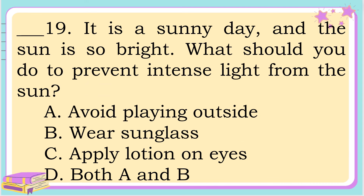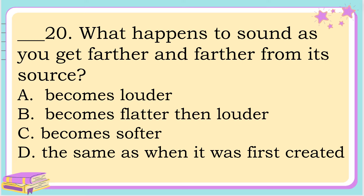Number 19. It is a sunny day and the sun is so bright. What should you do to prevent intense light from the sun? A. Avoid playing outside. B. Wear sunglasses. C. Apply lotion and ice. Or D. Both A and B. The answer is letter D: both A and B. Number 20. What happens to sound as you get farther and farther from its source? A. Becomes louder. B. Becomes flatter then louder. C. Becomes softer. Or D. The same as when it was first created. The answer is letter C. It becomes softer.